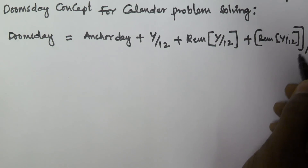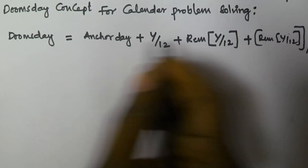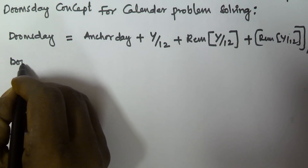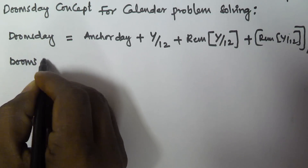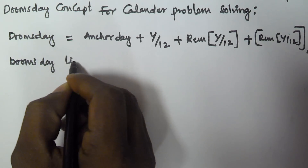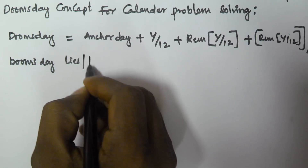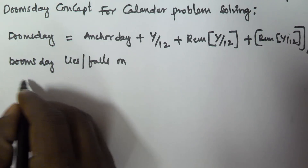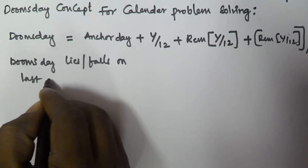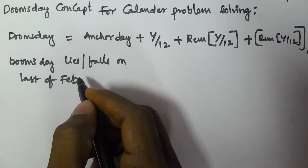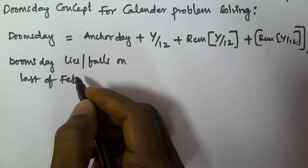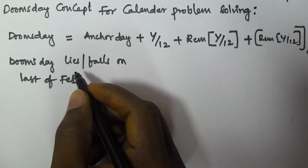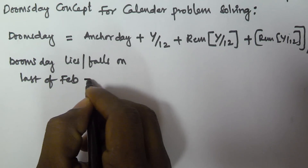Once we get the Doomsday, this Doomsday falls on the last day of February. If the given year is a leap year then it falls on February 29; if it is a normal year then it falls on February 28.